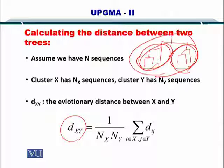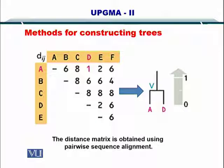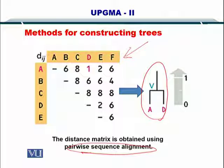You calculate the number of sequences in X and Y, you take the reciprocal, and you multiply it by the sum of the distances between I and J. So we continue with our example now. This was the distance matrix that you obtained from the pairwise sequence alignment, and you found out that A and D were the closest.